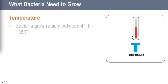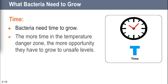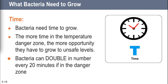Temperature is the first FAT TOM factor we can actually control. Bacteria grow fast in the temperature danger zone: 41°F to 135°F — memorize that. They grow even more rapidly between 70°F and 125°F. Above 135°F or below 41°F, bacterial growth may continue but becomes very slow. Bacteria also need Time — they don't instantly grow. We need to limit how long food sits in the temperature danger zone to prevent bacteria from doubling every 20 minutes.